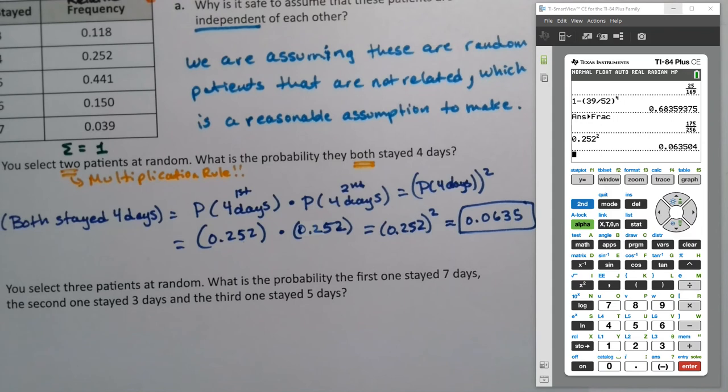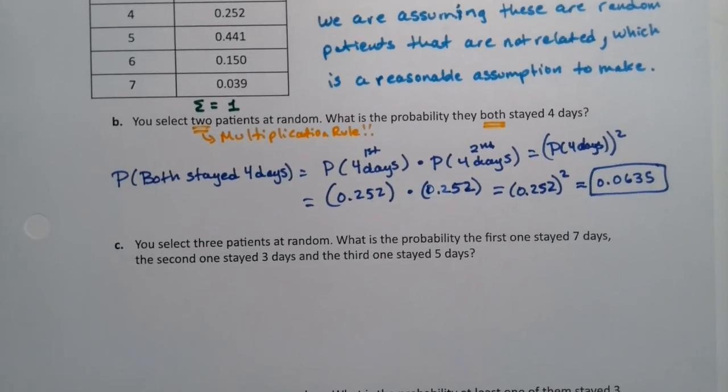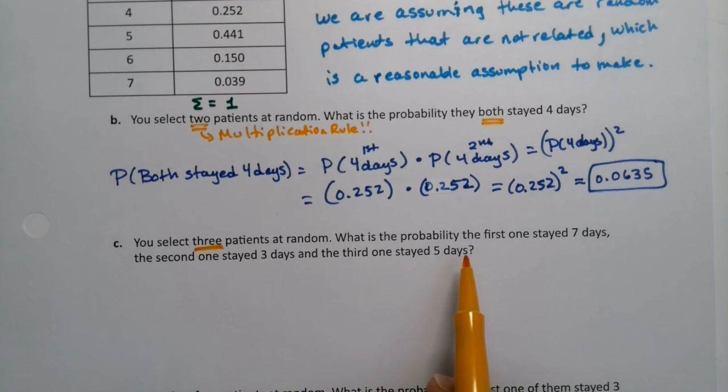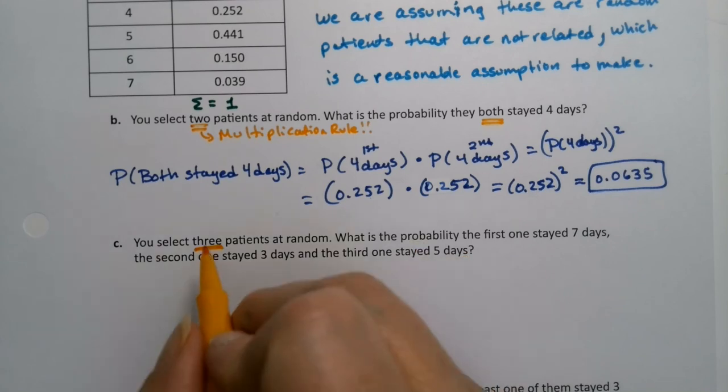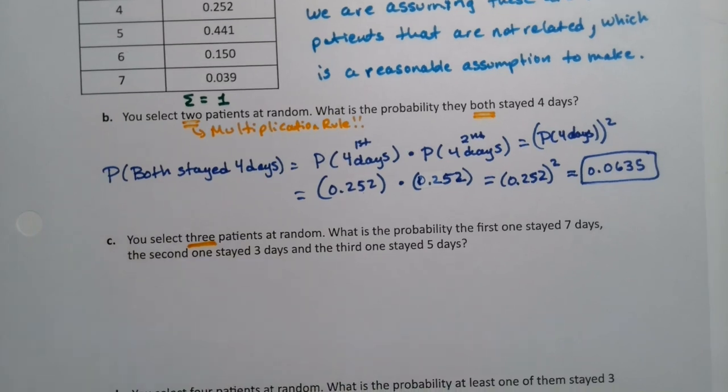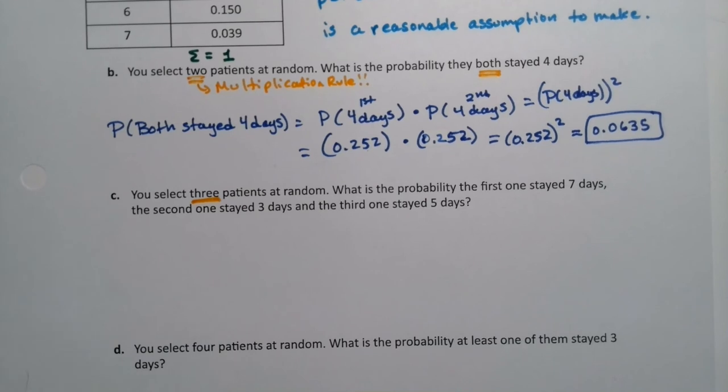All right. Now what about the next question? You select three patients at random. What is the probability that the first one stayed seven days, the second one stayed three days, and the third one stayed five days? Well, that's the multiplication rule, right? So whenever you're doing more than one thing, it's going to be either the multiplication rule or the at least one rule. And the at least one rule is actually multiplication rule with a lot of compliments in it.